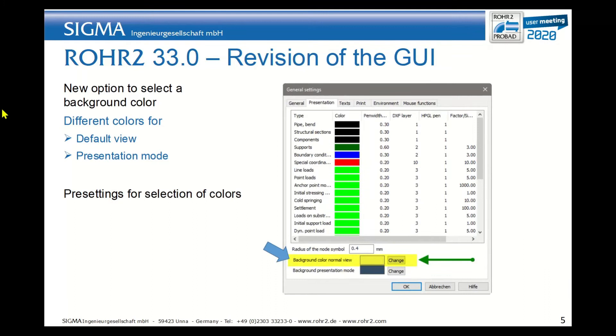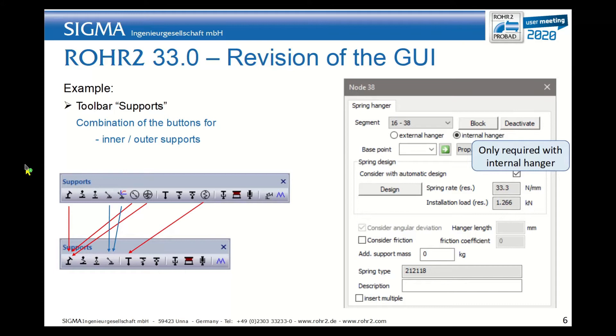So let's get a little bit more into the details and have a look at the toolbar supports. We can see that from the previous version to the new version, a lot of support symbols have been removed. All the rigid supports, external and internal supports, have now been regrouped under the support symbol, and the same is true for the internal and external rigid hangers.